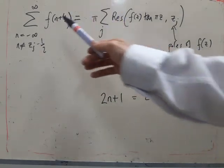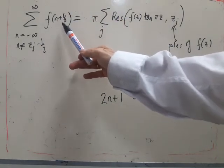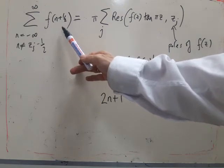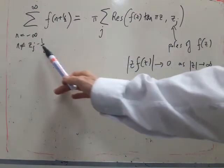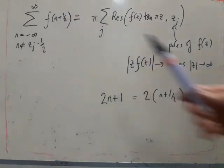So if f has a pole at zj, then we don't want n plus a half ever to equal zj.